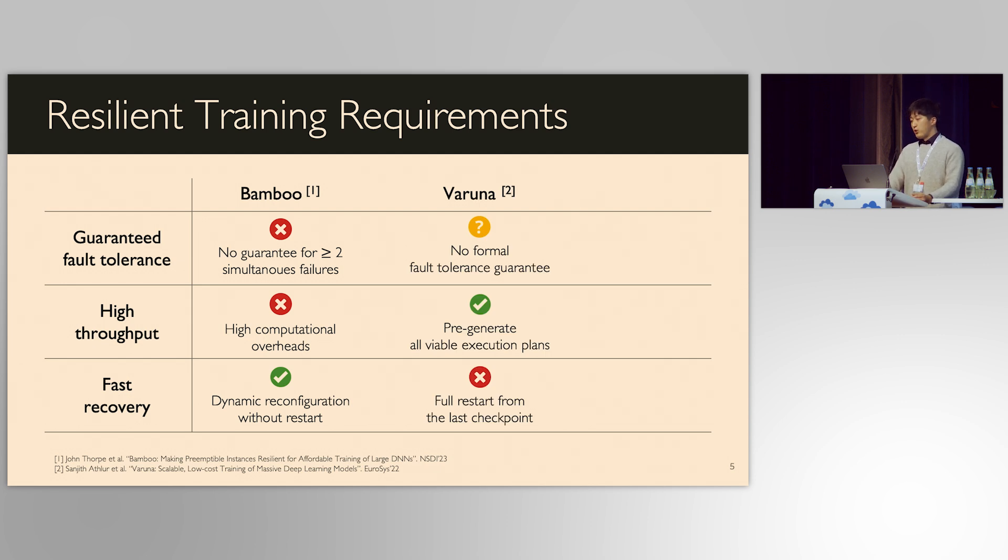Varuna proposes pre-generating all viable execution plans so that when failures happen, it can quickly switch to a new plan. As there is no computational overheads, it is generally fast. Still, it needs to fully restart by terminating and relaunching all processes, loading the last checkpoint, so its recovery is slow.